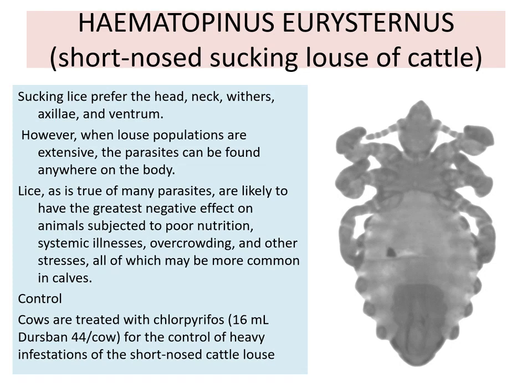For control, cattle are treated with chlorpyrifos for the control of heavy infestation of short-nosed cattle louse. Normally 15 ml of Dust-Ban 44 per cow is the quantity used, and the treatment is with chlorpyrifos. In this way we can control the short-nosed sucking louse of cattle.